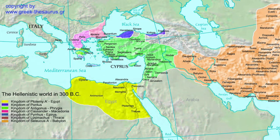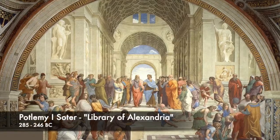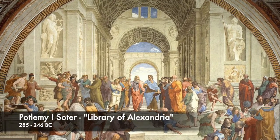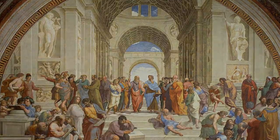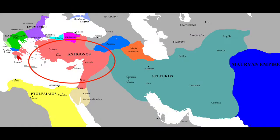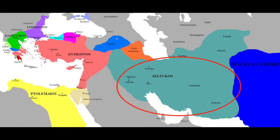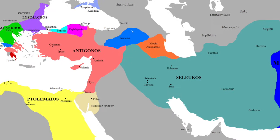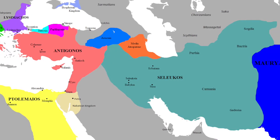The Hellenistic period occurred from 323 to 31 BCE and is characterized by a rising Greek culture from the western Mediterranean to India. After the death of Alexander the Great in 323 BCE, his realm was split into three regions: the Antigonid Kingdom, the Seleucid Empire, and the Ptolemaic Kingdom. These empires characterized the Hellenistic period.